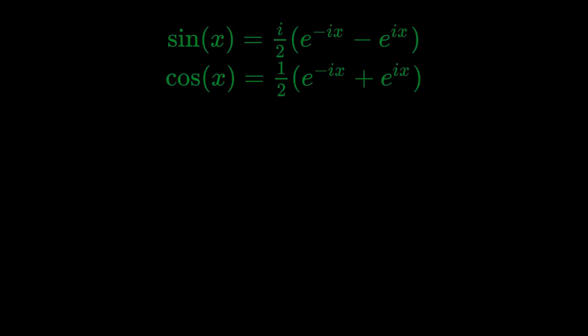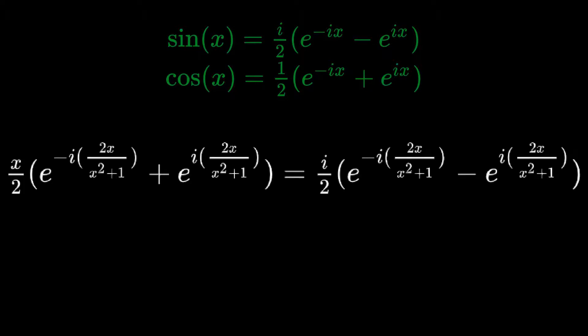We can then use the exponential forms of sine and cosine to rewrite this expression as x over 2 times e to the negative i 2x over x squared plus 1 plus e to the i times 2x over x squared plus 1 equals i over 2 times e to the negative i 2x over x squared plus 1 minus e to the i 2x over x squared plus 1.